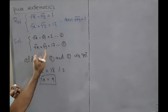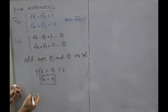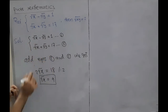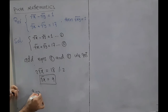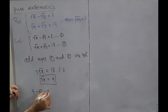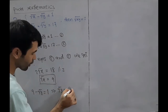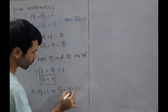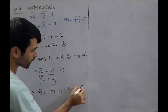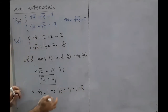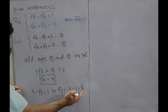Substituting into equation 1: 9 minus square root of y equals 1. This implies square root of y equals 9 minus 1, which equals 8. So square root of y equals 8.